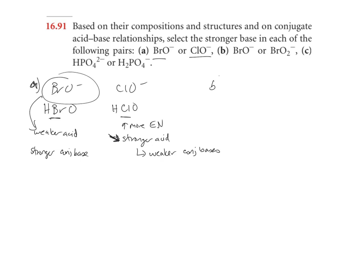Part B, we have BrO⁻ versus BrO₂⁻. Same approach. Look at the acids. This comes from HBrO, this comes from HBrO₂. Now, this is a different concept from the same video lecture, 16.10. Looking at the number of oxygens, here we have two oxygens versus one oxygen. As you add more oxygens, we get the stronger acid. So this must be the weaker acid. The weaker acid has a stronger conjugate base. So BrO⁻ would be the stronger base.